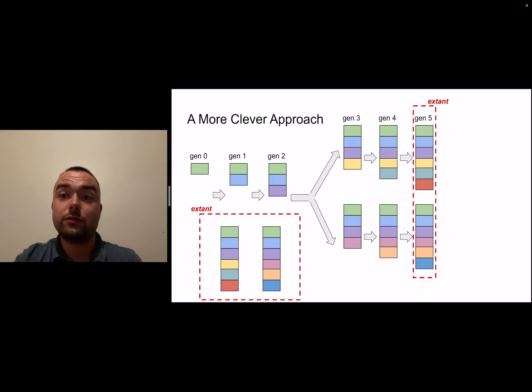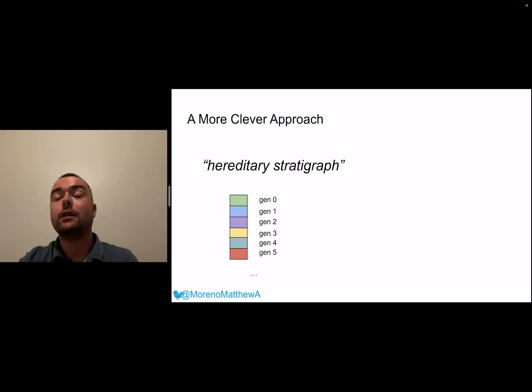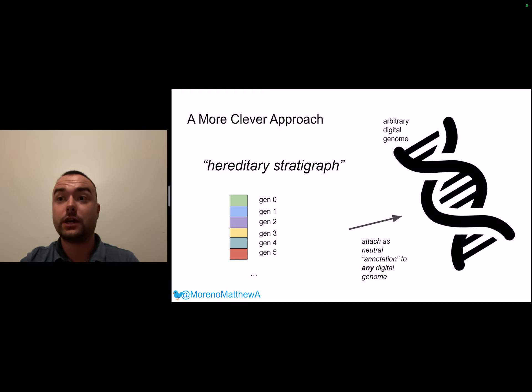We've got that same fork event, do a few more generations, grab our extant organisms and now in order to determine an estimate of the most recent common ancestor of these two extant organisms we just line them up and compare them. We know that they share common ancestry where those two randomly generated fingerprints are in common and then we can see where they actually differentiate and then have independent lineages after generation three. So that's really the main idea of our approach and we refer to this as a hereditary stratigraph as an analogy to geological stratigraphy where you're studying layers that accumulate over time.